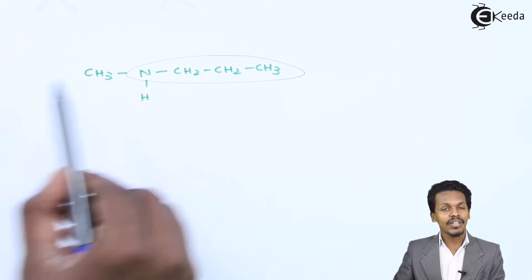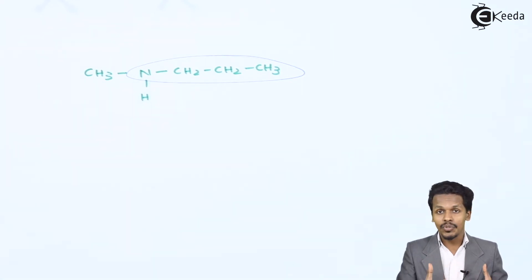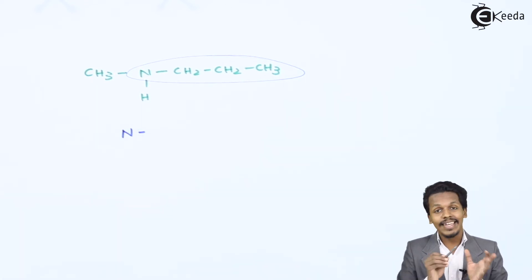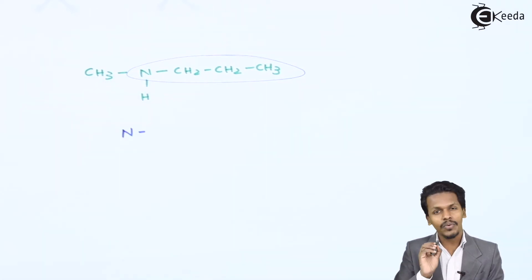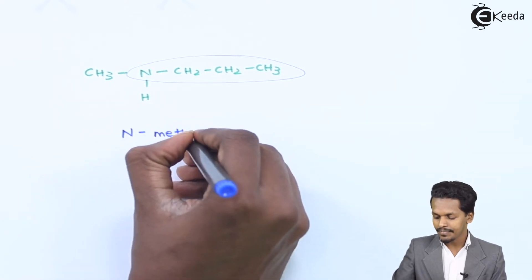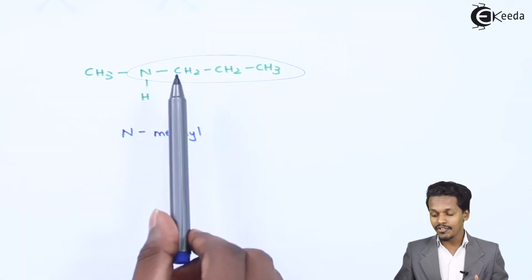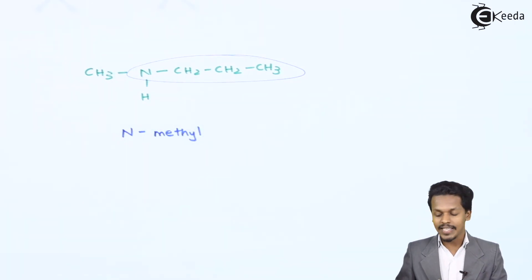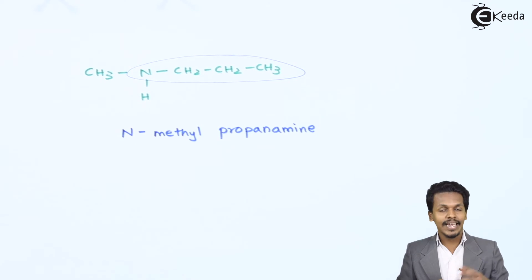The CH3 alkyl group will be considered as a substituent attached to the nitrogen. That is the reason the name should include 'N' — which stands for the alkyl group attached directly to nitrogen. So the substituent, which is a methyl group, gives us N-methyl. The parent chain consists of nitrogen along with three carbon atoms, making it propanamine. So the full IUPAC name is N-methylpropanamine, where the letter 'e' is replaced by amine.